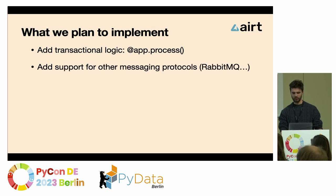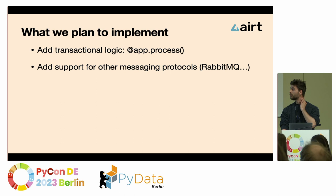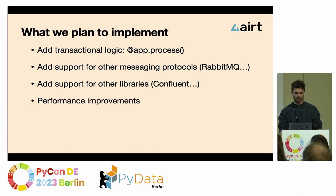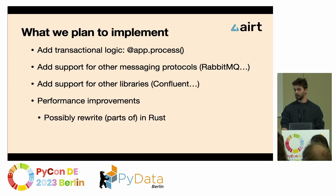We also want to add support for other messaging protocols such as RabbitMQ — this has been requested by Reddit users. Right now we build on top of AIO Kafka, but we also want to support libraries like Confluent or Python-Kafka so you can choose which one to use. We're also planning to possibly rewrite our consumers and producers in Rust to enhance speed.